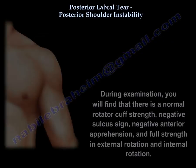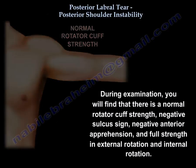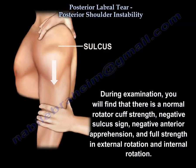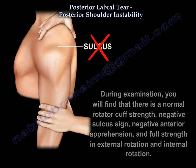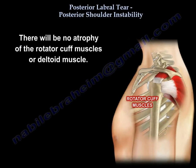During examination, you will find normal rotator cuff strength, negative sulcus sign, negative anterior apprehension, and full strength in external rotation and internal rotation. There will be no atrophy of the rotator cuff muscles or deltoid muscle.